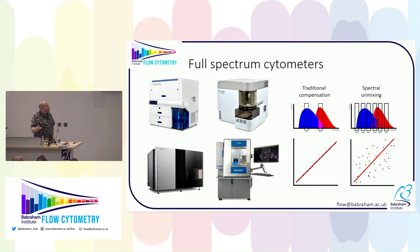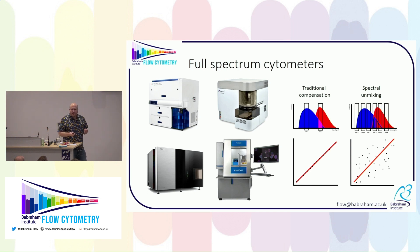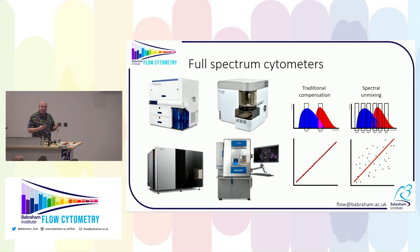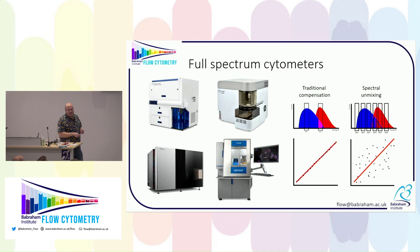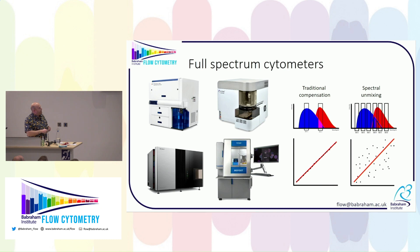As Professor Robinson said before, they would analyze the data well after acquiring it because the maths or the processing was difficult. And so if you process your conventional data in a spectral way, you'll get some surprising results. So, traditional compensation on a traditional instrument: you have bandpasses, you measure the peak emission in each detector, and you do the compensation to remove this overlap.